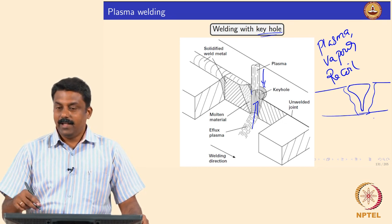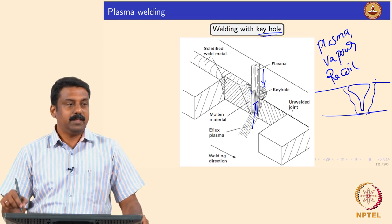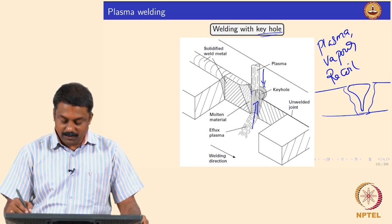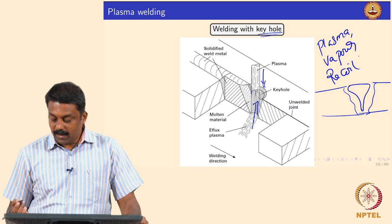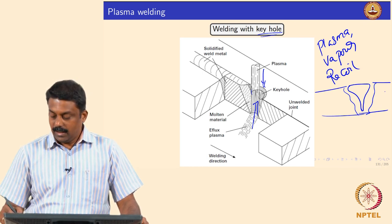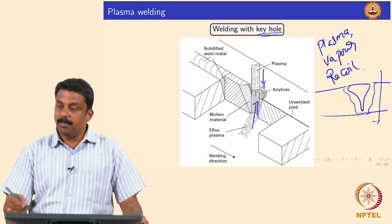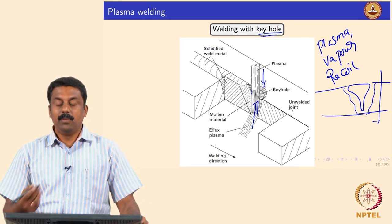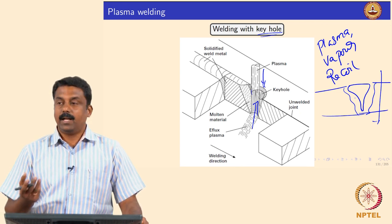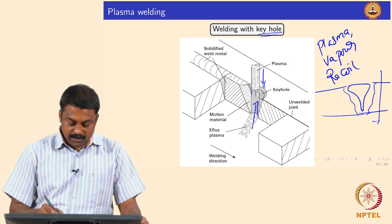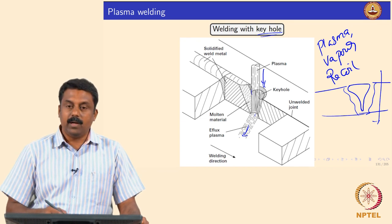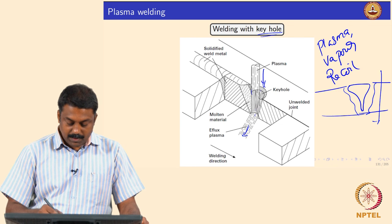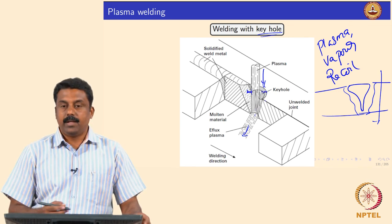This keyhole is created because of the plasma jet, vapor, and recoil pressures. When looking at laser welding we will see in detail the keyhole formation mechanisms and force balances. For now we can assume these three forces can also be generated with plasma, and this is sometimes beneficial. For thicker sections requiring full penetration welds, a keyhole is formed, and the stability of the keyhole determines the weld characteristics. The vapor jet escaping creates recoil pressure, and the vapor pressure also pushes the boundaries of the keyhole open.